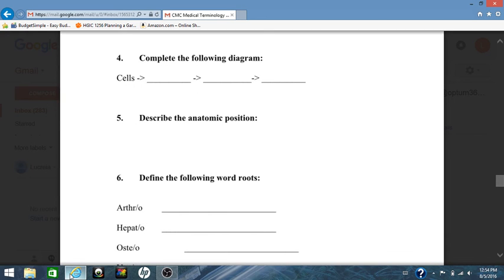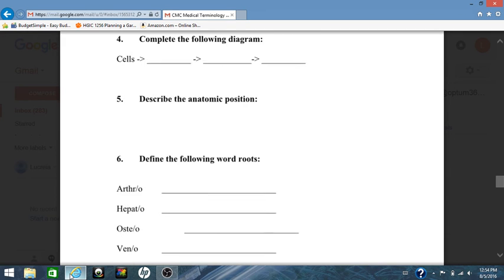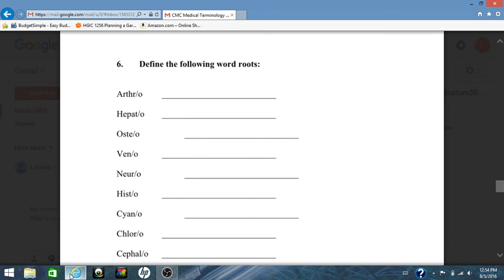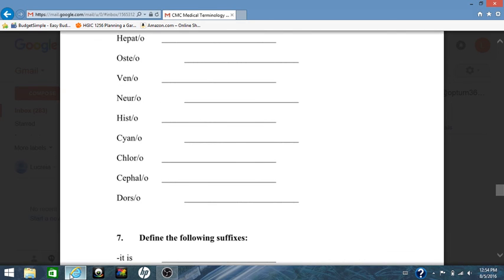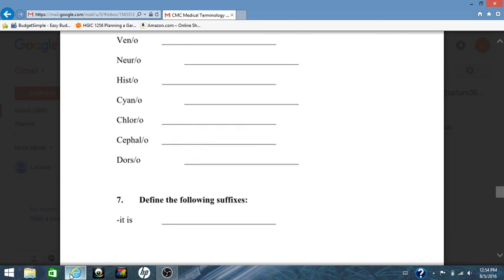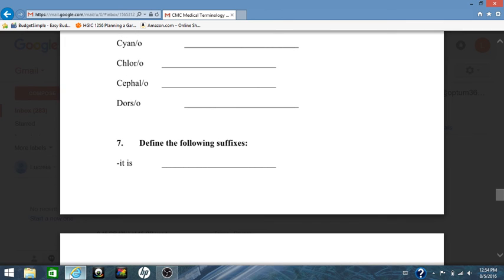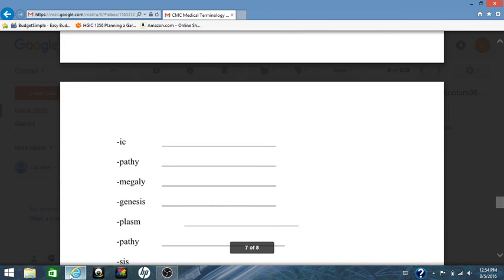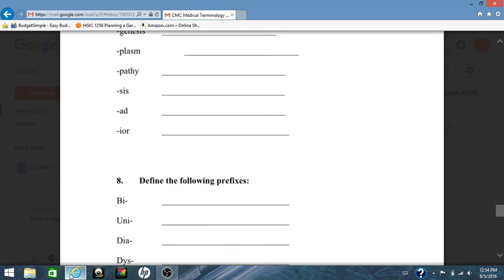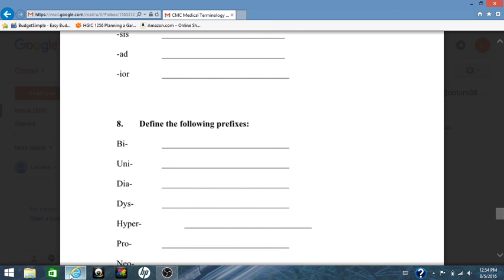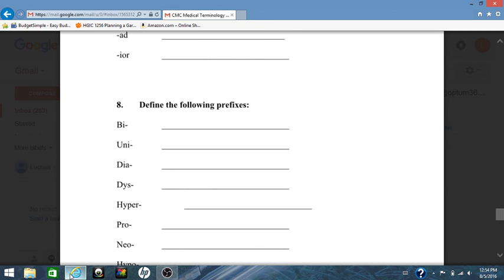Number 5, describe your anatomic positions. Number 6, define the following word roots. And I've given you a group of them. Some may come from unit 1, 2, or 3. Seven, define the following suffixes. Again, these come from units 1, 2, and 3.